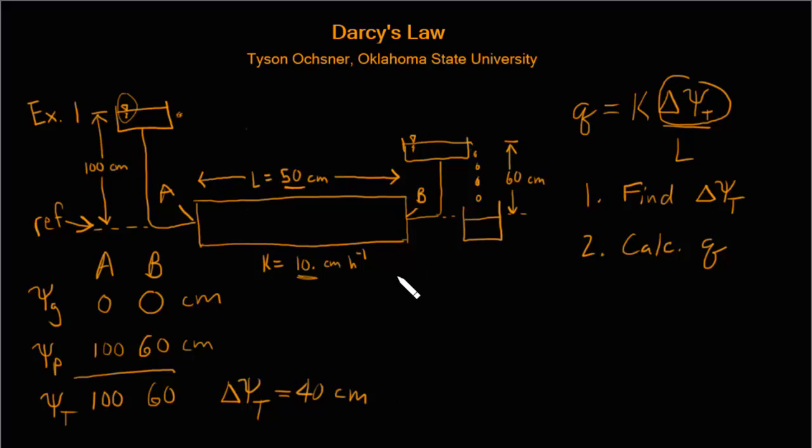Now we're ready to calculate the flux. So writing Darcy's law we know the flux Q is equal to the conductivity which in this case is 10 cm per hour. I have the decimal there to show that this measurement has two significant digits. The 1 and the 0 both being significant. I plug in a delta T which is 40 cm. And the length of the column which in this case is 50 cm.